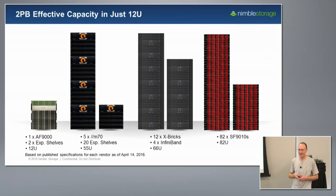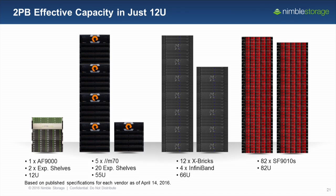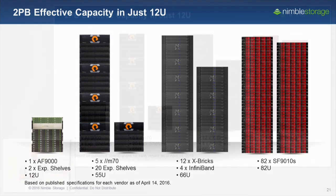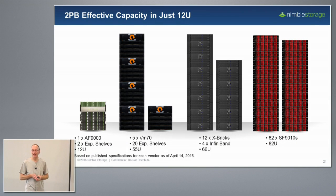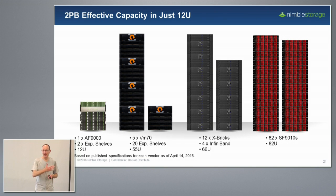Taking those first two aspects — memory efficiency and type of flash — together paints a very dramatic picture. To reach a two-petabyte effective capacity footprint: Nimble uses a single AF9000 with two capacity shelves, each 4U. Pure Storage needs five independent arrays with 20 shelves each. EMC needs a full cluster of 8 Xbricks plus another half cluster. And SolidFire needs 82 nodes to reach the same capacity point.